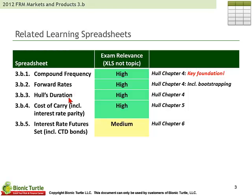3B3 illustrates Hull's duration. In the FRM, we're exposed to duration and convexity for the bond asset class in both Hull — Tuckman gives more coverage, but it does come up in Hull as well. 3B4 is the cost of carry model that we use to price forwards and futures on commodities, including as a special application interest rate parity. And 3B5 is a workbook, a collection of worksheets, illustrating some of the difficult ideas in Hull's chapter six on interest rate futures.